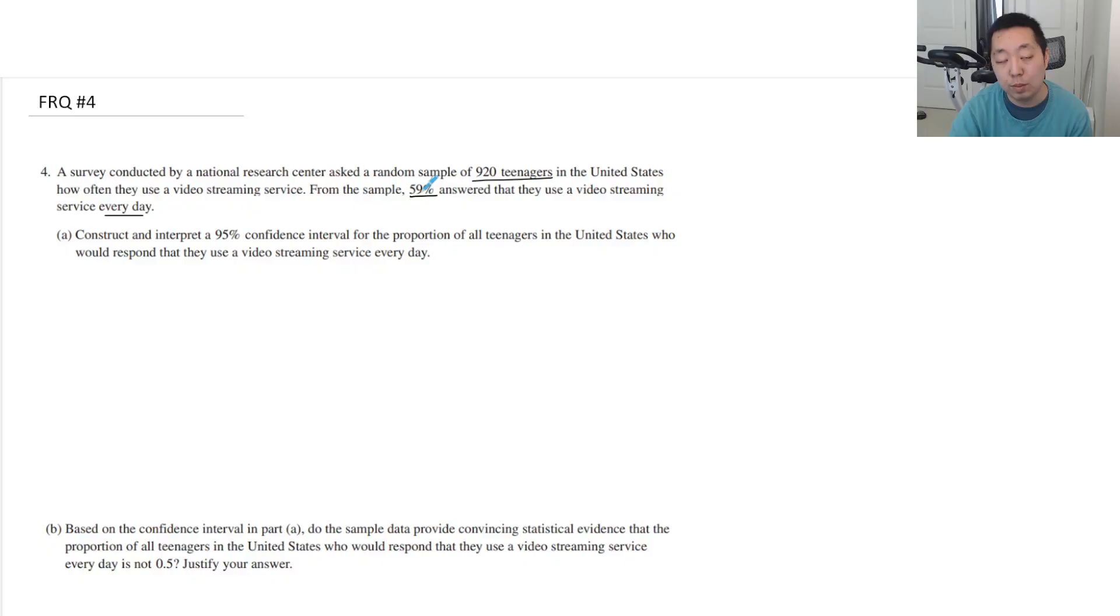This is a proportion. You should be thinking percentages, proportion. Construct and interpret a 95% confidence zone for the proportion of all teenagers in the unit who respond that they use a video streaming service every day.